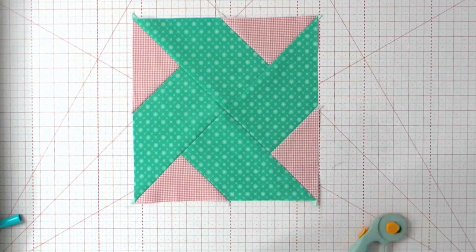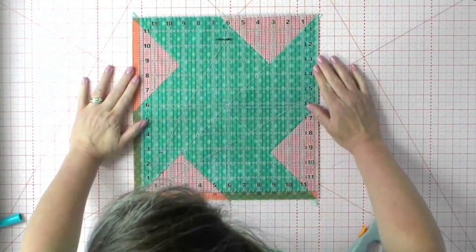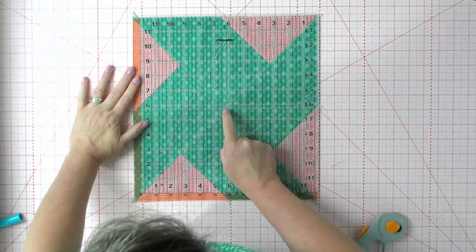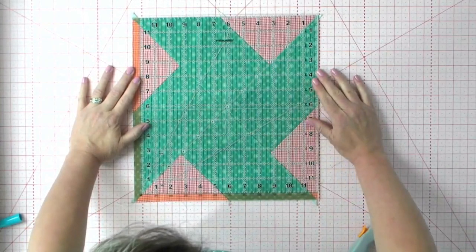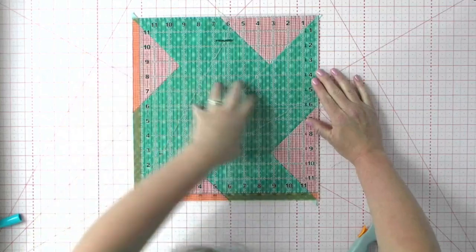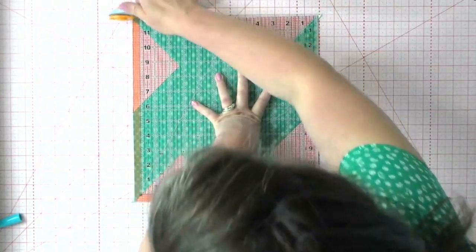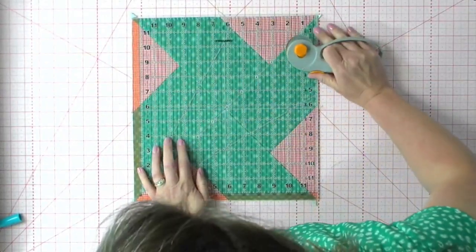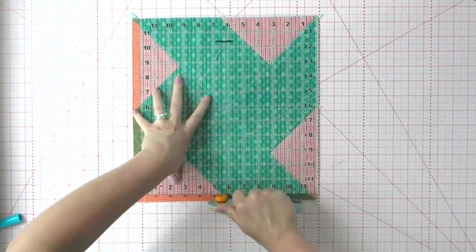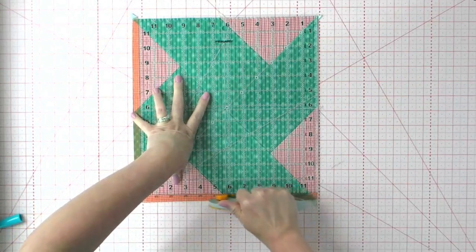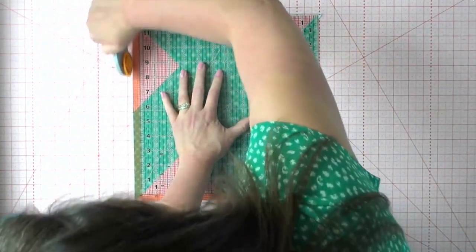So last step though, is we need to square this up to 12 and a half inches. So I'm putting the six and a quarter inch mark right here. The diagonal is running on the diagonal of my block and I think I just have some little dog ears to trim off is all. Maybe just a little bit right here. There's another set of dog ears. It blended in with my mat. Let me just trim those up.